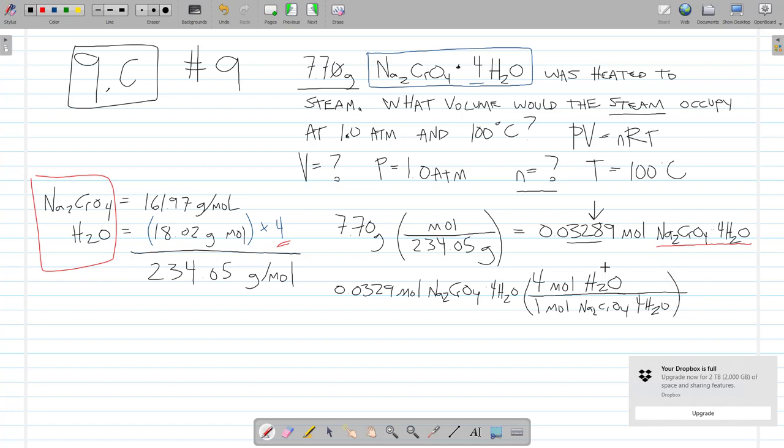What I'm saying is that when I have 1 of these, I have 4 waters. It's like saying a car. If I have 1 whole car, then I have 4 tires, because 4 tires are part of a car. 4 molecules of water are part of this whole compound. When I have this many moles of the whole compound, I have 4 times more moles of water. That gives us 0.132 moles of water.